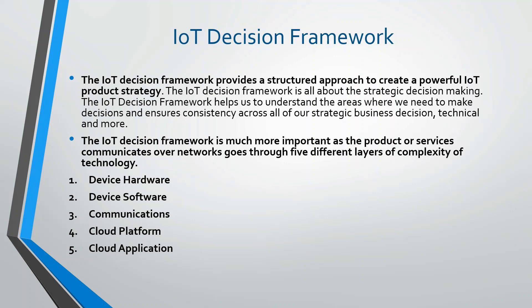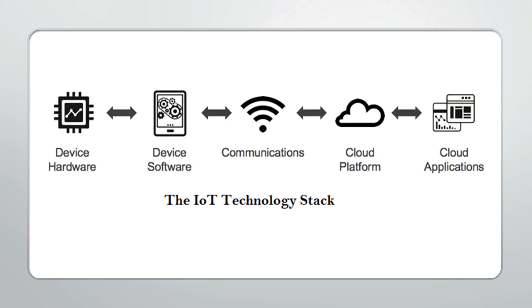Now, an important concept is the IoT Decision Framework, which plays an important role whenever we are developing an IoT application. The IoT Decision Framework provides a structured approach to create a powerful IoT product strategy. As a product or service communicates over the network, it goes through five different layers of technology complexity: device hardware, device software, communication, cloud platform, and cloud application. This is what is known as the IoT technology stack.